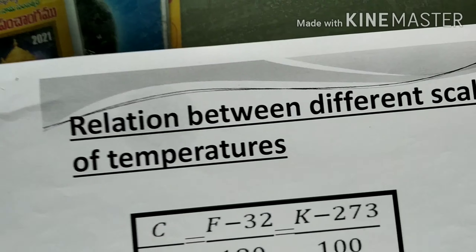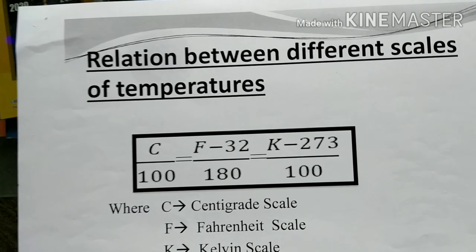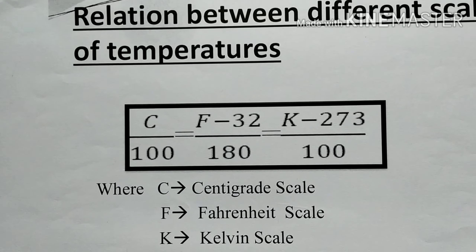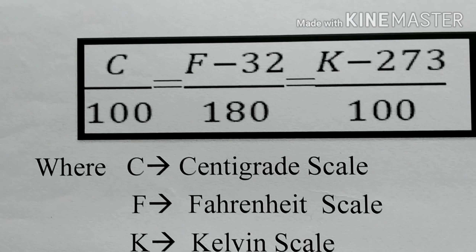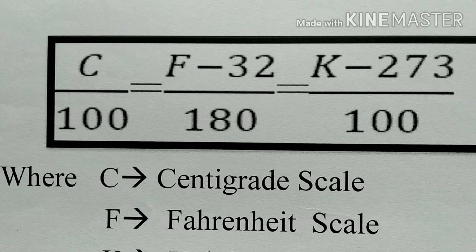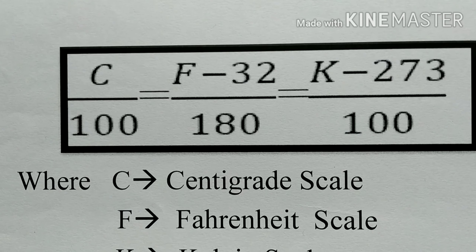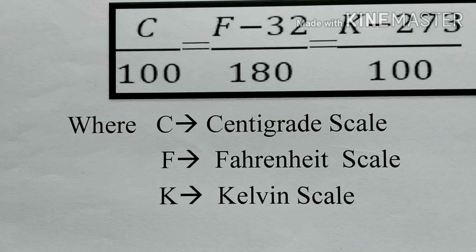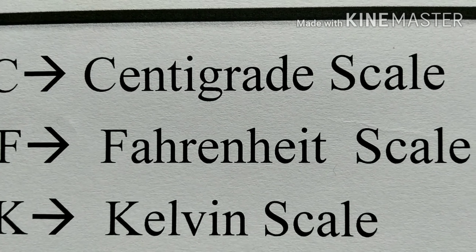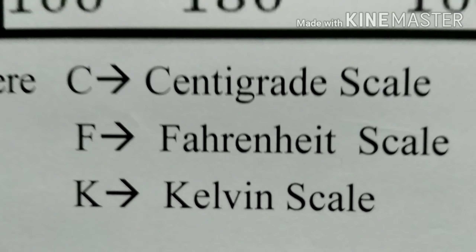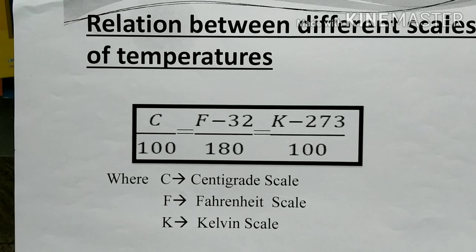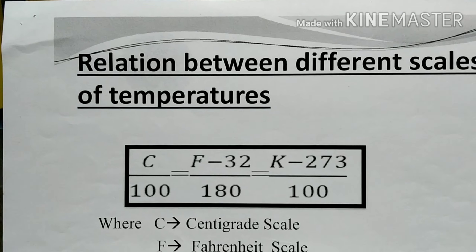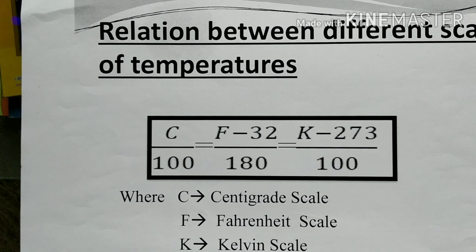We have different scales of temperatures. The relation is: C/100 = (F − 32)/180 = (K − 273)/100, where C is the centigrade scale, F is the Fahrenheit scale, and K is the Kelvin scale. This is the relation we use for the conversion of different scales of temperatures.